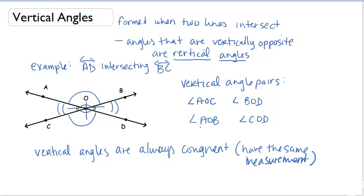So vertical angles are always congruent. So instead of just saying these angles are vertical, I can say they're also congruent. So AOC with two arcs is congruent to BOD, and AOB with one arc is congruent to COD.